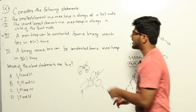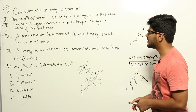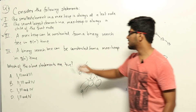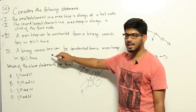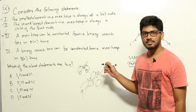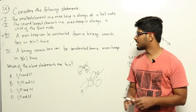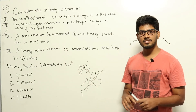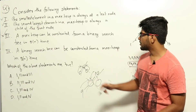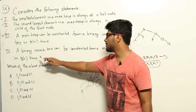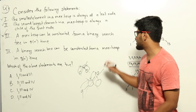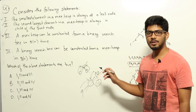Statement 4: a binary search tree can be constructed from a max heap in theta(n) time. This statement is wrong. Suppose we assume it can be done — if we have a max heap and construct a binary search tree in theta(n) time, then from that binary search tree we can do an in-order traversal in theta(n) time to print all elements in sorted order. So the total time would be theta(n) to write all elements in sorted order.